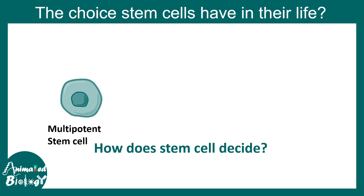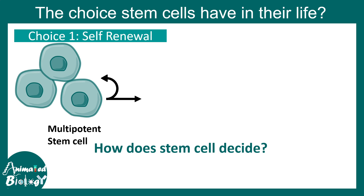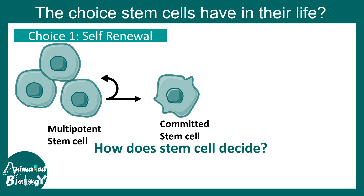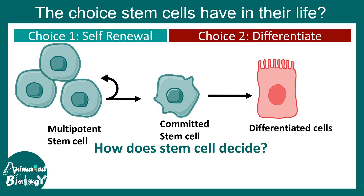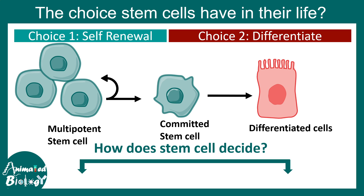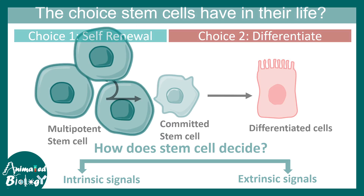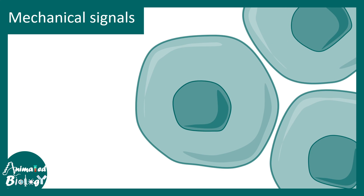The question is: how does a stem cell decide when to regenerate itself versus when to differentiate? It's a big challenge for the stem cell. Option one: self-renew. Option two: commit and become a differentiated cell. The drive that dictates these outcomes could be intrinsic — coming from inside — or extrinsic — coming from the external environment. So what could these intrinsic and extrinsic cues be? Let's try to understand.